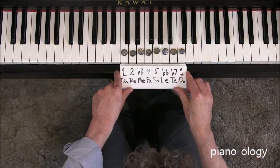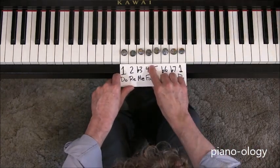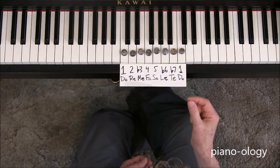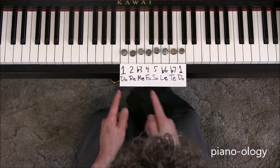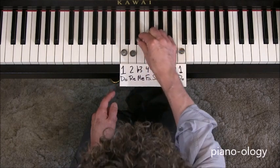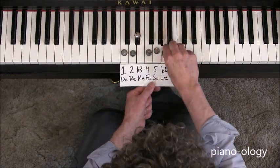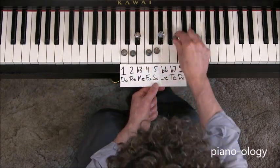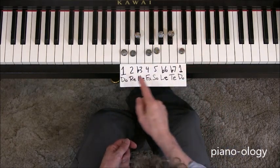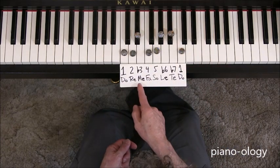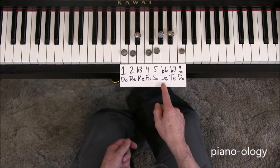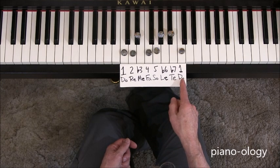Now let's do... This happens to be the natural minor scale. So we've got a flat three, a flat six, and a flat seven. So we've got do, re, me, fa, sol, le, te, do.